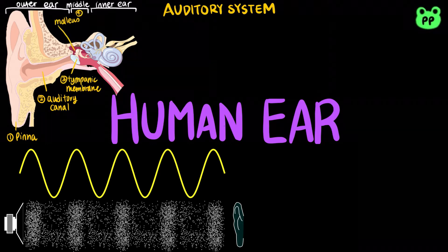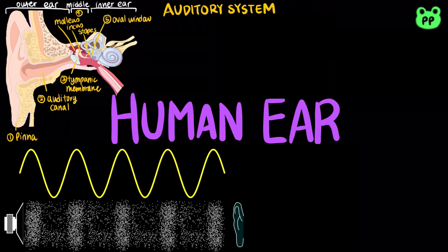The three bones of the middle ear — malleus, incus, and stapes — then transmit the vibrations of moving air to the oval window on the cochlea, which is part of the inner ear.